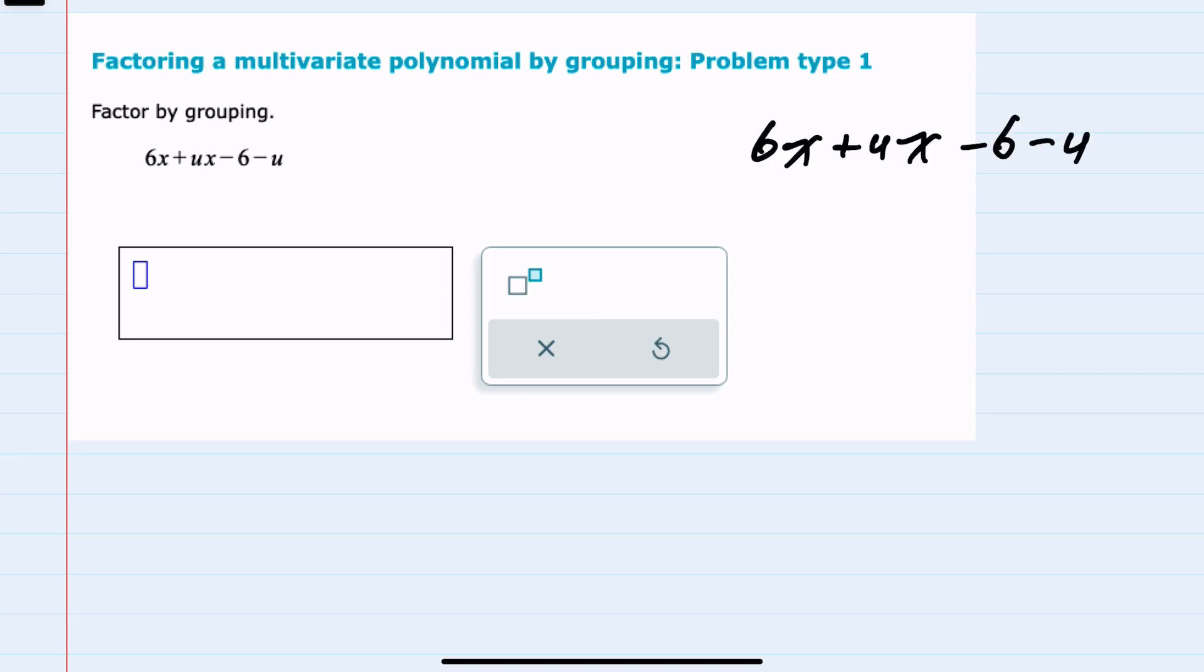I can see that when I group the first two terms together, there's a common x between both of those terms. So I can factor an x out. If I factor an x out of the first term, which was 6x, I now have just the 6. If I factor the x out of the second term that was ux, I now have just the u.